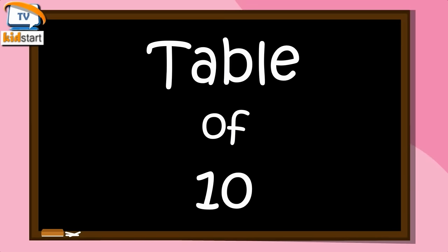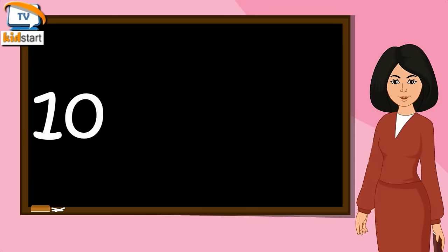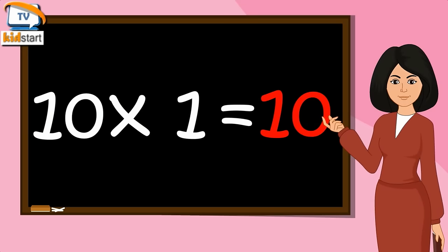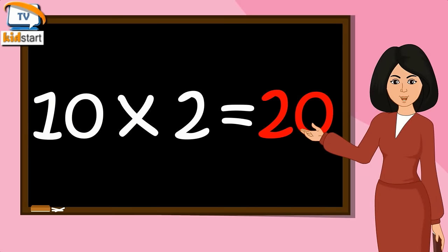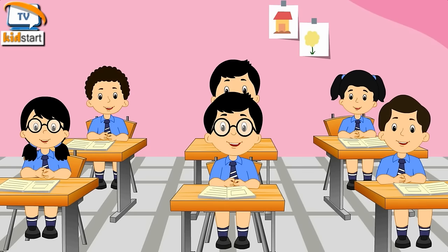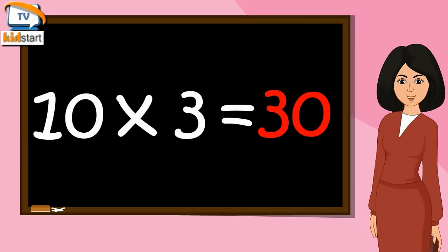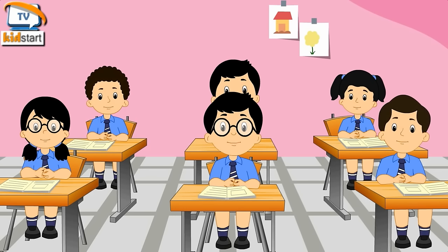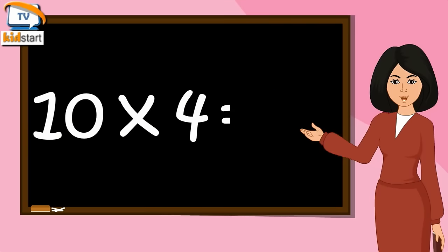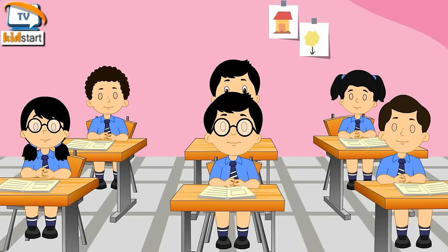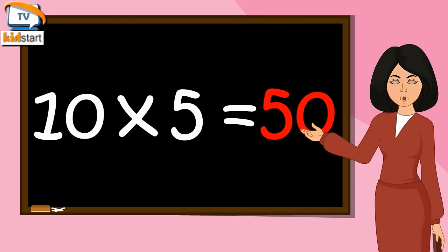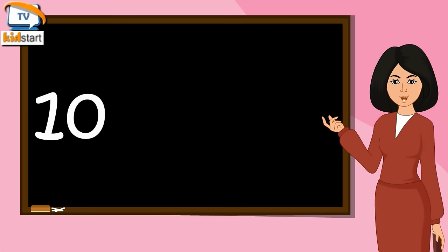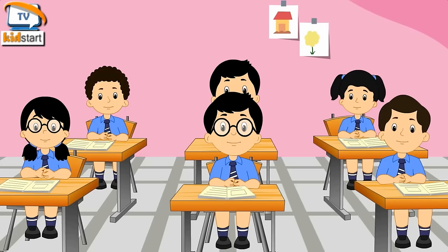Table of Ten. Ten ones are ten. Ten twos are twenty. Ten threes are thirty. Ten fours are forty. Ten fives are fifty. Ten sixes are sixty.